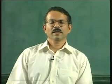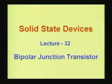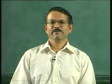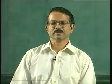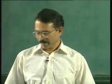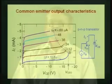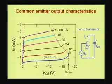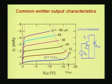We now come to the last lecture of the bipolar junction transistor. Let us see what we have achieved in our previous lecture. We have explained the common emitter output characteristics and identified the breakdown, saturation, and active regions.